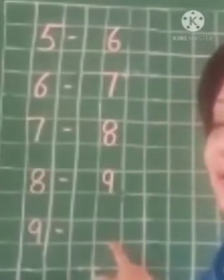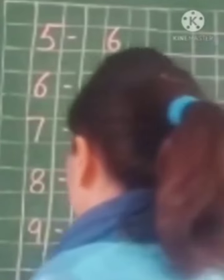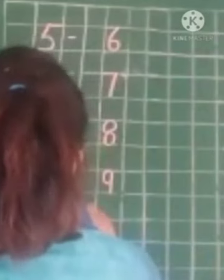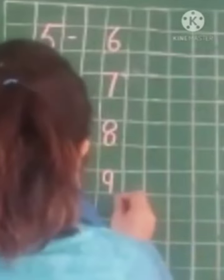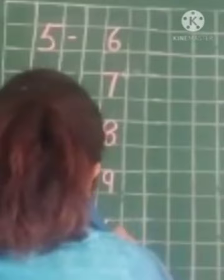Yes, we will write here number 10. So children, you will write here 1, and underneath 9, you will write 0.